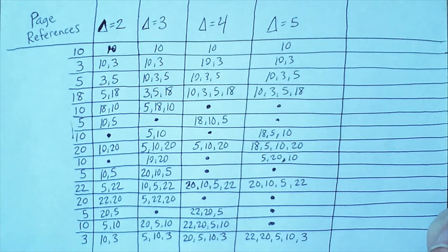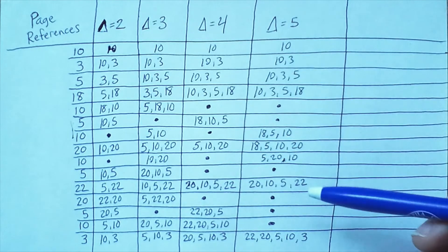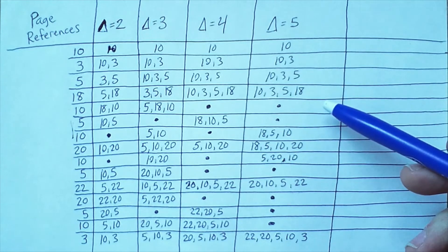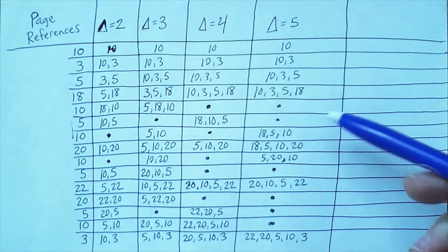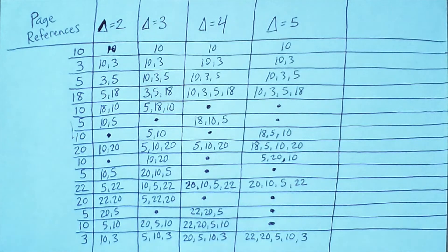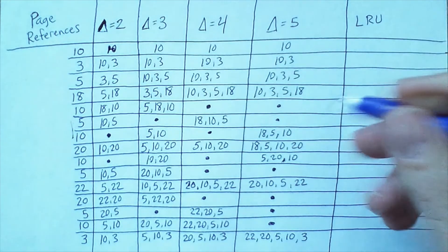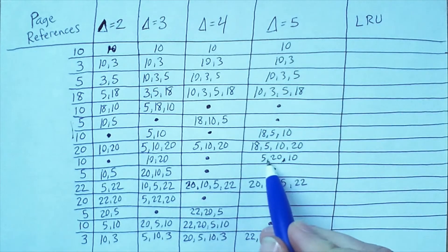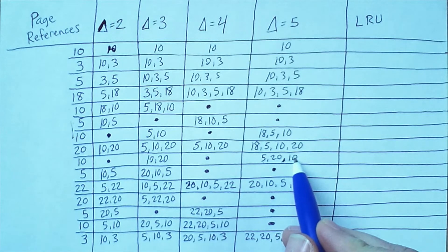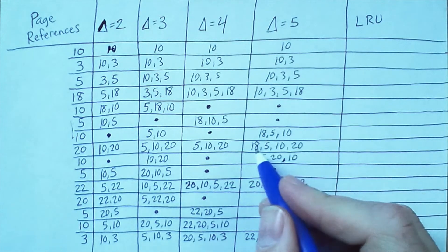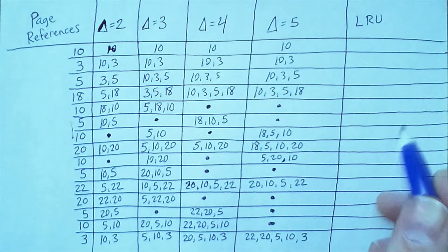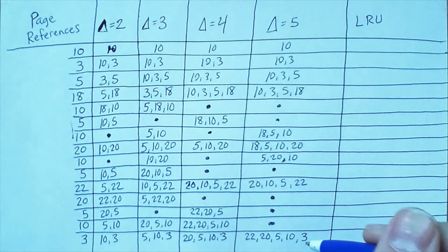So here we access 5 and we also access it here, and so here is a point where the working set does not change. And then we access 10 which was also already in the set, so we actually have an example of the working set shrinking going from three elements down to just two. So once again the working set is 5, 10 for a delta of three.